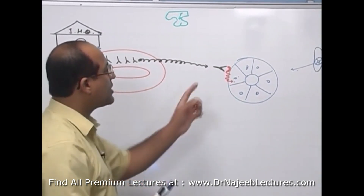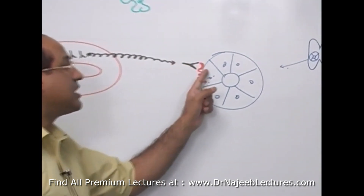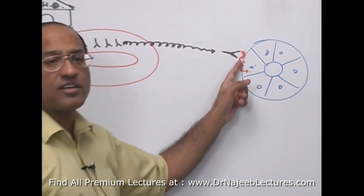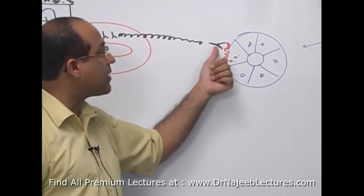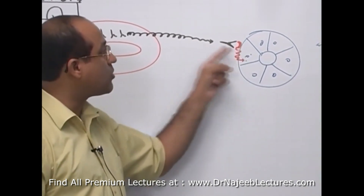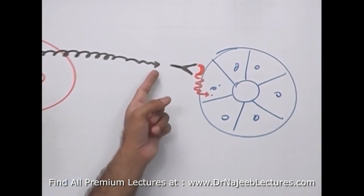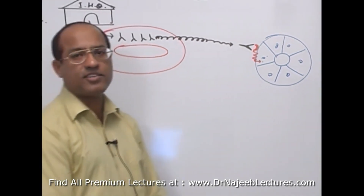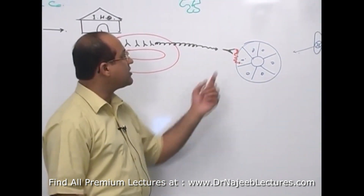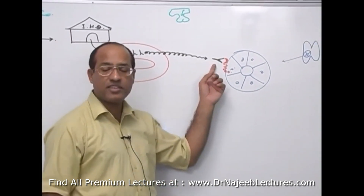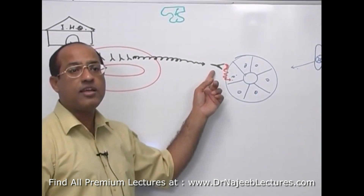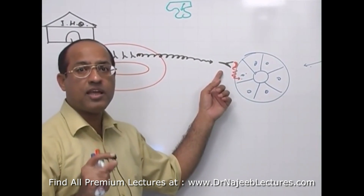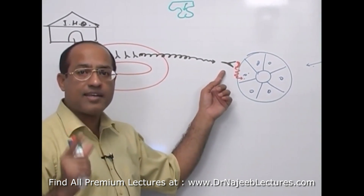Not only do these autoantibodies bind with the receptor, but they also stimulate the receptor. These autoantibodies behave like TSH, but the key difference is that they are able to stimulate the receptors more powerfully and for a longer duration compared to TSH.